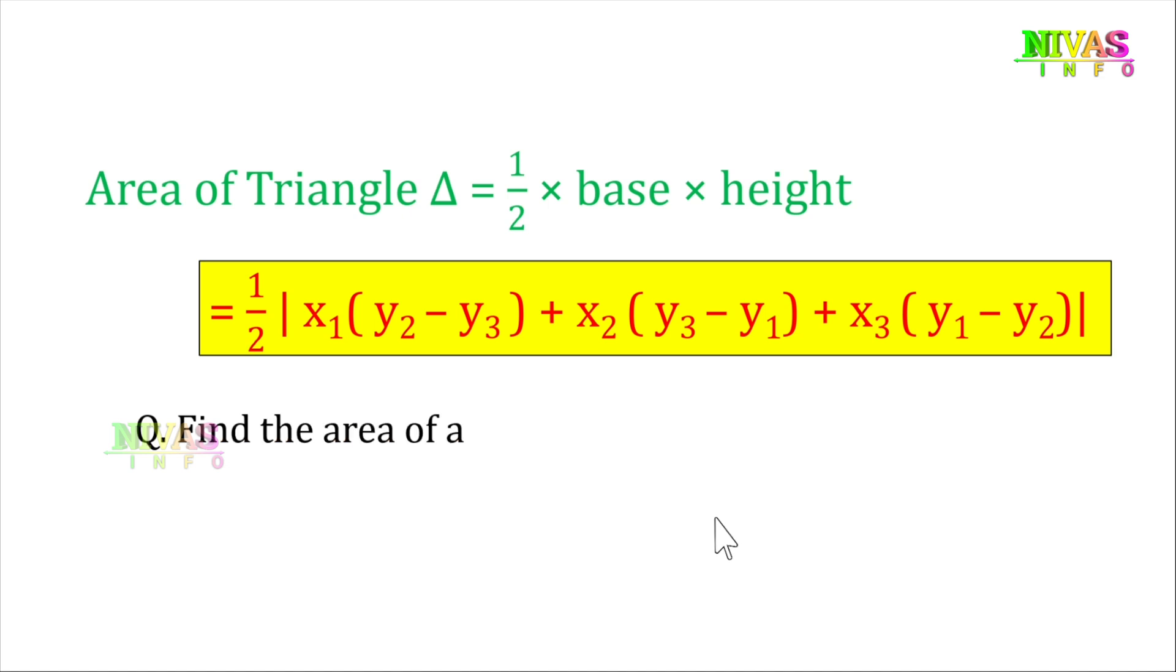For example, find the area of a triangle whose vertices are (1, -1), (-4, 6), and (-3, -5). Here we don't know the base and height, but we have the coordinates. We have three vertices with coordinates x1, y1, x2, y2, x3, y3. That's why we use this formula.